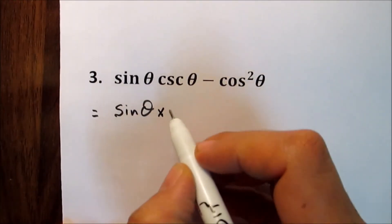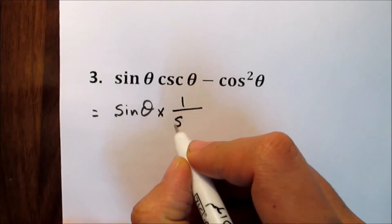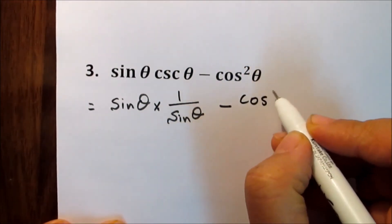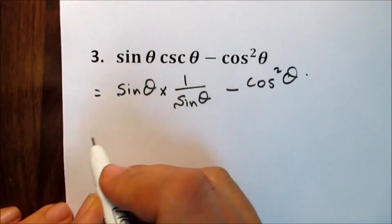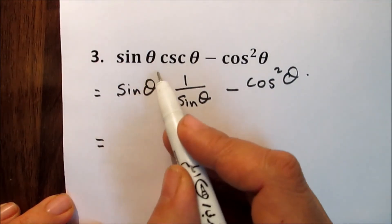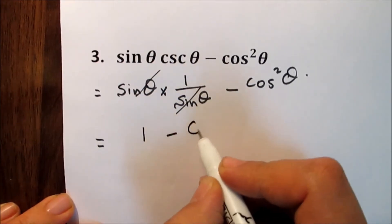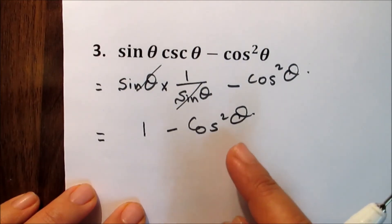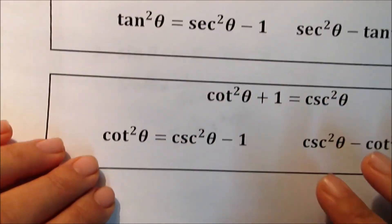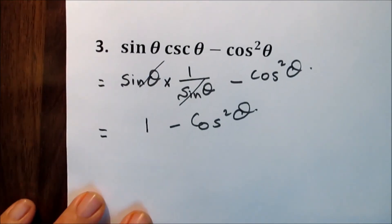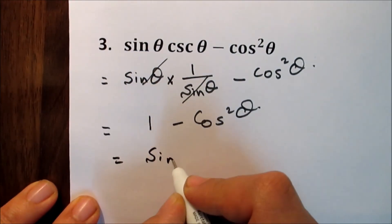So we have sine theta times 1 over sine theta, minus cosine squared theta. Here we have sine theta in the numerator and denominator, so they cancel. We get 1 minus cosine squared theta. If it's 1 plus or minus something squared, recall the Pythagorean identities. 1 minus cosine squared equals sine squared, so this equals sine squared theta.